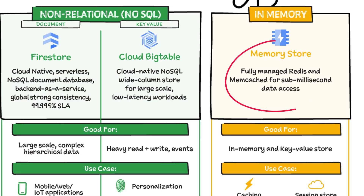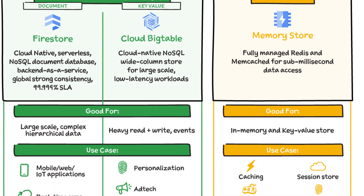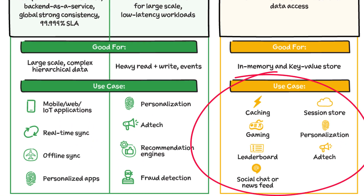Memorystore is a fully managed in-memory data store service for Redis and Memcached. It automates the complex tasks of provisioning, replicating, failover, and patching, so you can spend more time coding. And because it offers fast caching, Memorystore is great for web and mobile gaming, leaderboards, social chat, or even newsfeed applications.